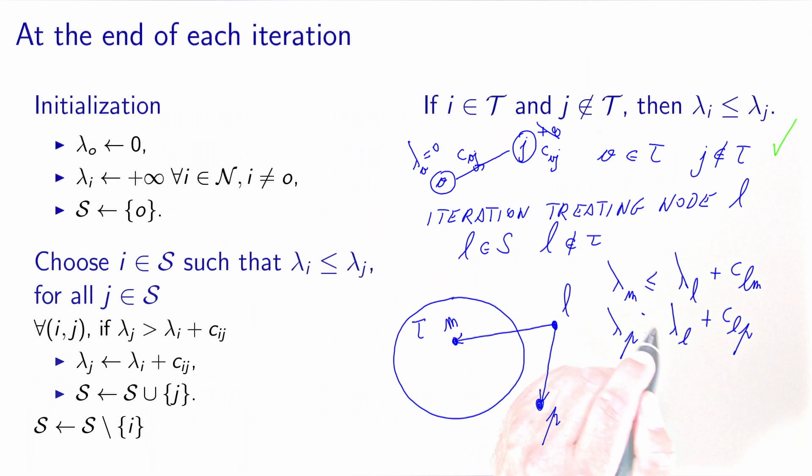Now if lambda P is strictly greater than lambda L plus C_LP, then the algorithm will set lambda P to lambda L plus C_LP. This is the statement here. It means that lambda P takes a value which is larger than the value of lambda L, again, because the cost is non-negative. And by the assumption of the induction, we know that lambda L is larger than any node in T. And because lambda P is even larger, the property holds for lambda P as well.